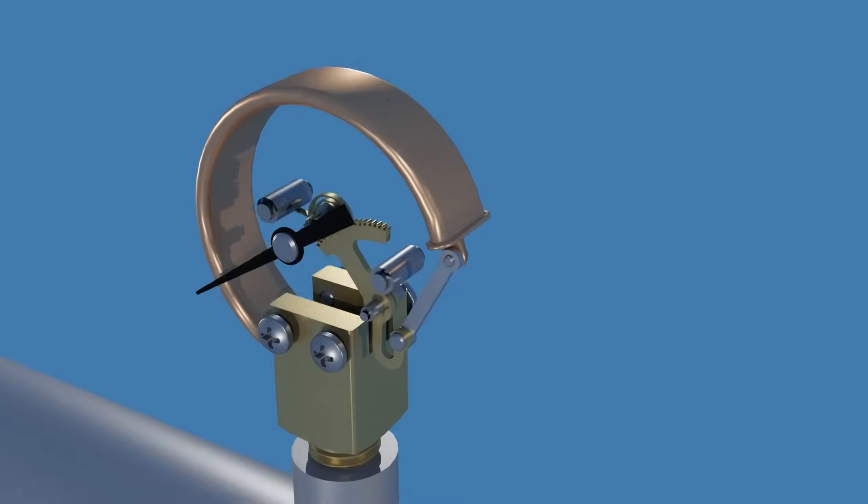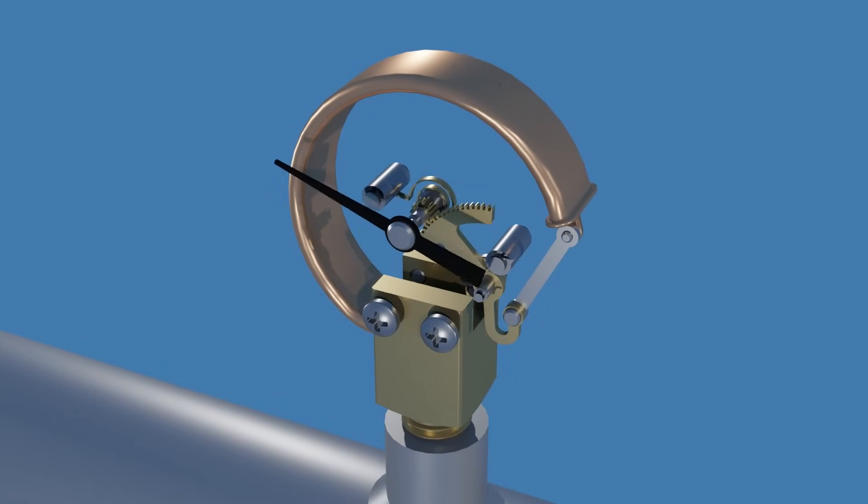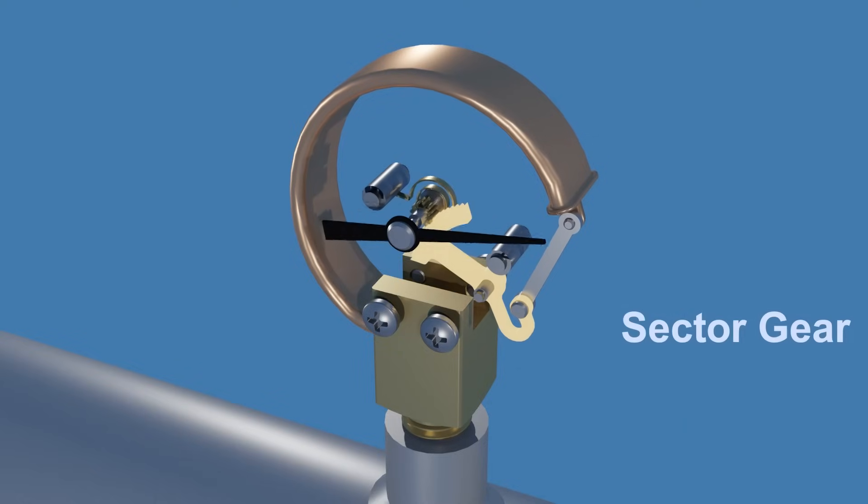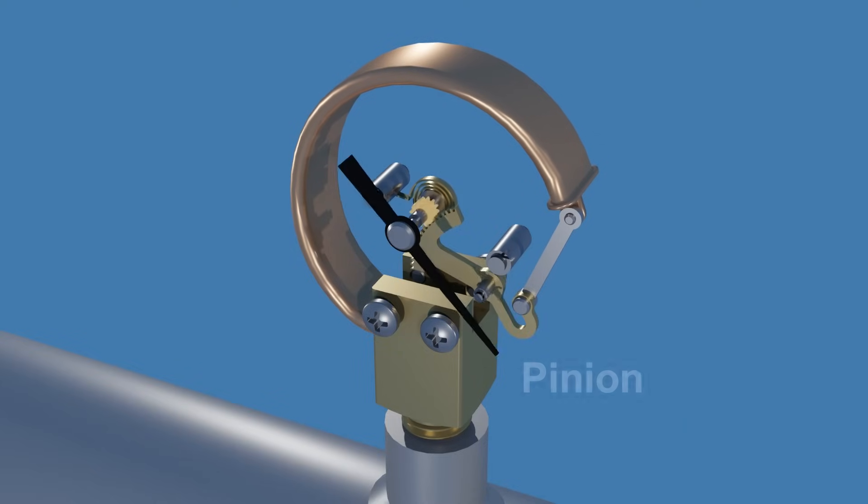As the Bourdon tube straightens, it transmits its linear motion through the connecting link. That drives the sector gear, that meshes with the pinion driving the pointer.